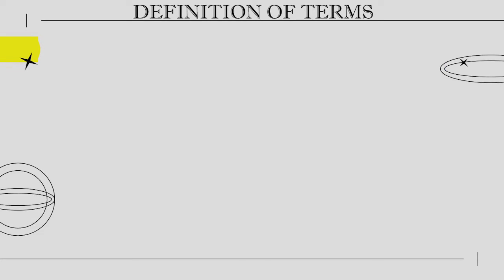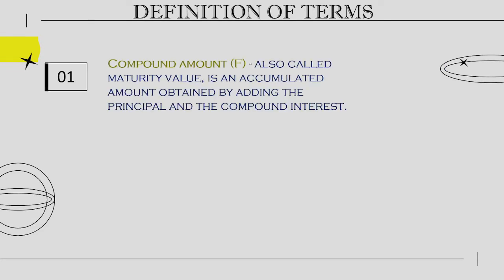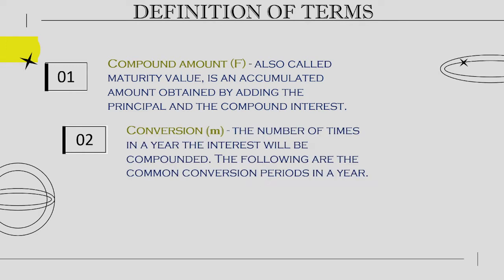Definition of terms. Compound amount, also called maturity value, is an accumulated amount obtained by adding the principal and the compound interest. Conversion is the number of times in a year the interest will be compounded.